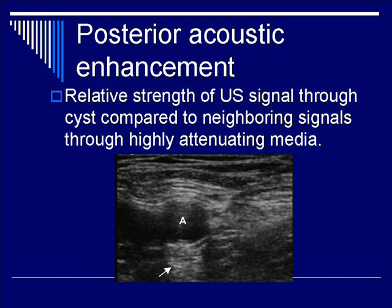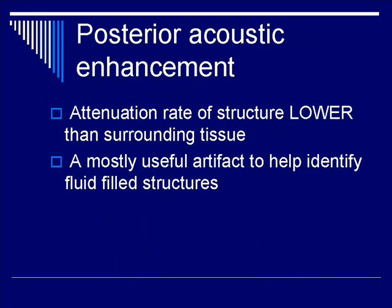Posterior acoustic enhancement is seen in this example, where A describes the anechoic fluid within the cyst. The relative strength of the ultrasound signal through the cyst compared to neighboring media is much less, and therefore the signal distal to it becomes enhanced. The phenomenon is described by the fact that the attenuation rate of the structure is lower than the surrounding tissue. This is mostly a useful artifact to help identify fluid-filled structures during your scanning.